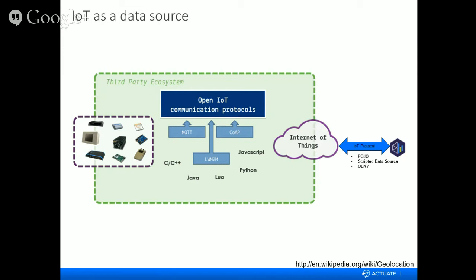We talked about using a POJO to bring in a data source. We also have a scripted data source — if you're familiar with JavaScript and can get to the data in Java, you can write scripting inside your BIRT report, bring it back, and tell BIRT when it's done retrieving data. The advantage is you don't have to roll your own JARs and distribute them. There's also an ODA, which is a graphical UI approach to connecting and reusing data sources.